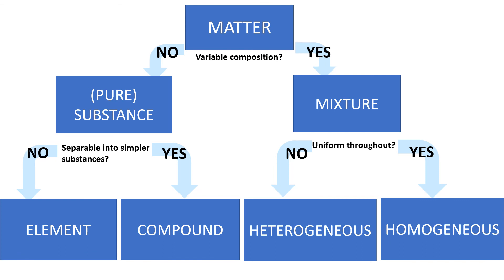A mixture is made up of varying quantities of either compounds, elements, or both. Since each part of the mixture has not reacted with another part, the identities of the different materials are unchanged. A characteristic of mixtures is that they can be separated into their components. A heterogeneous mixture is one in which the composition is not uniform throughout; a phase is a separate layer in a heterogeneous mixture. A homogeneous mixture is one in which the composition is uniform throughout, and all solutions are considered homogeneous.